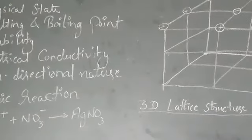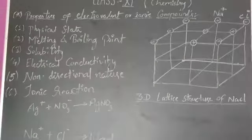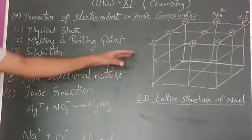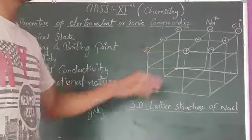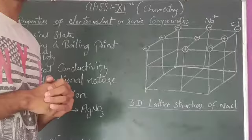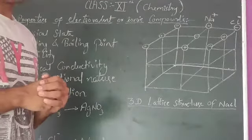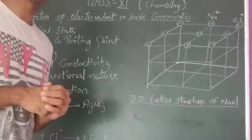Next property is melting and boiling point. If we look at the opposite charge lines, there is strong electrostatic force of attraction which is difficult to break easily. This is why it has a high melting and boiling point.